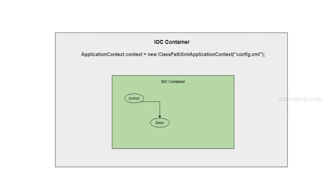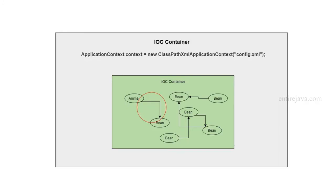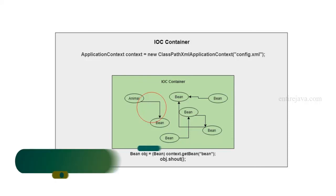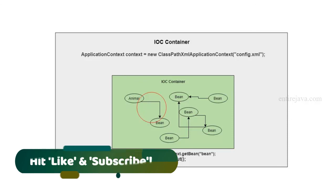This phenomenon of connecting beans is called wiring. Going forward, our examples are going to get a little more complex, with more beans defined in our XML and more connections between them. After all this happens with the above instruction, we can use the context object to get the desired bean and call its methods. Once we are done, Spring will also take care of destroying all these objects. In other words, the purpose of the container is to manage the life cycle of all the beans in our application.